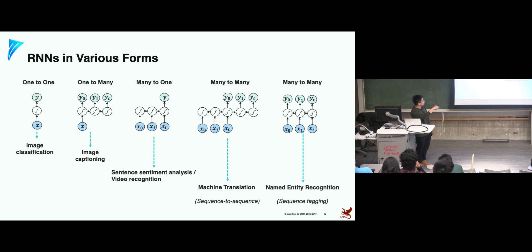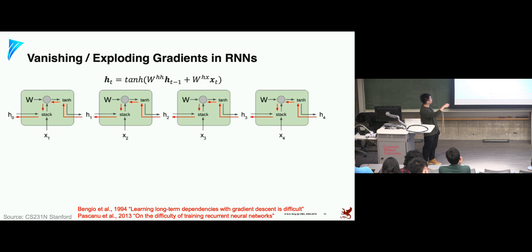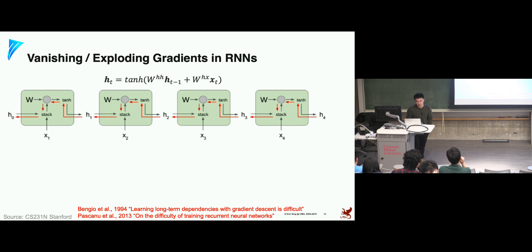How about the computation in each step? Each step in the recurrent network is called a cell. Given the inputs and the hidden state from the last step, we compute the new hidden state using a weight matrix W and operations like tanh. But the key issue of this model is vanishing and exploding gradients.